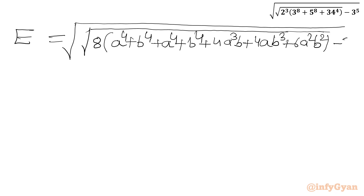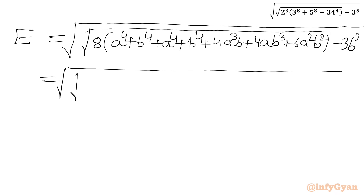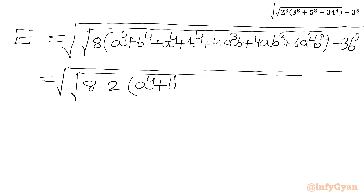So we get E equal to the square root of the square root of 8 times, in the bracket: a^4 + b^4 plus the expansion a^4 + b^4 + 4a³b + 4ab³ + 6a²b², then minus 3b². I take 2 common, giving 2a³b, 2ab³, and 3a²b².